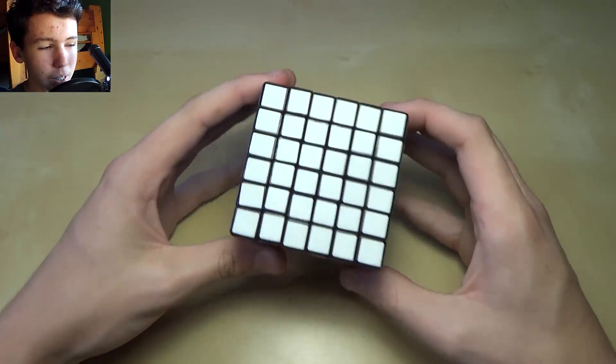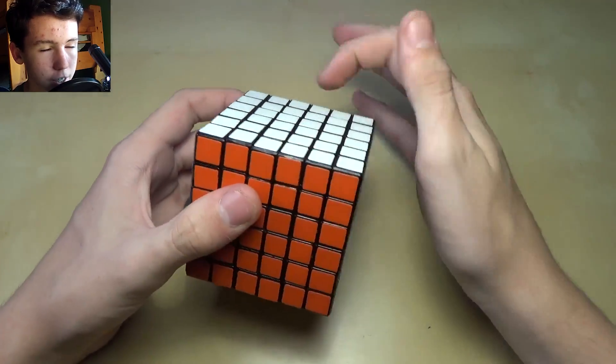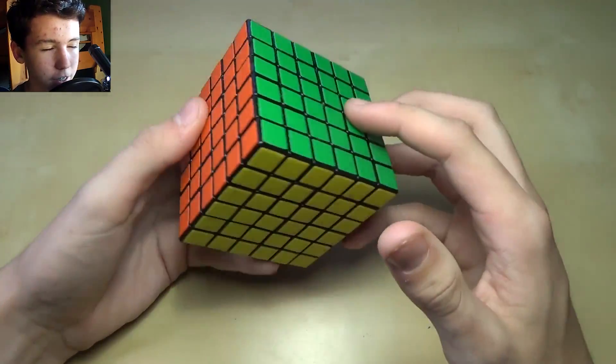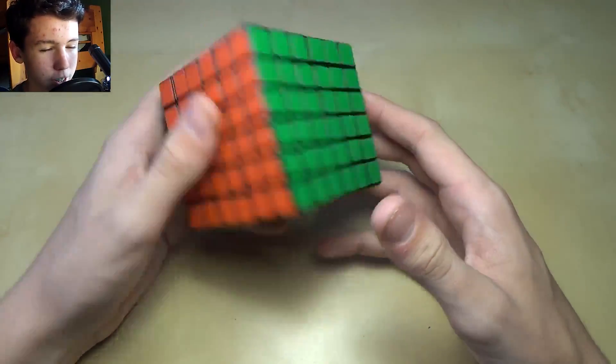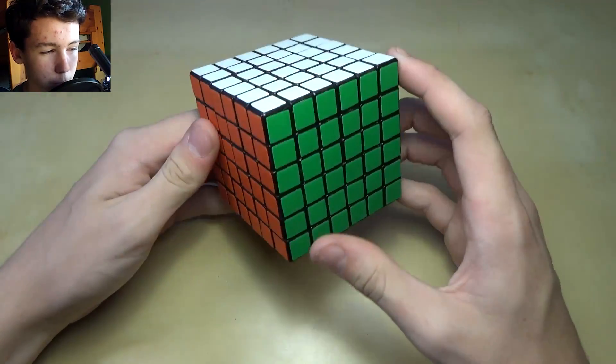So obviously an even layer puzzle will be a lot harder than an odd layer puzzle because of the internal layer. And this is the original V-Cube so it's kind of stable which kind of helps but at the same time it's pretty big.